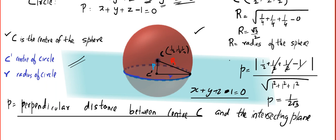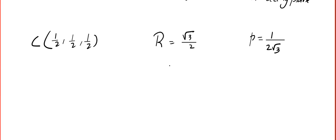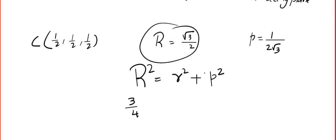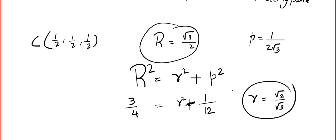We get R² = r² + P², so r² = R² − P² = 3/4 − 1/12 = 8/12 = 2/3. When you take the square root, you get r = √2/√3. That is the radius of the cylinder.